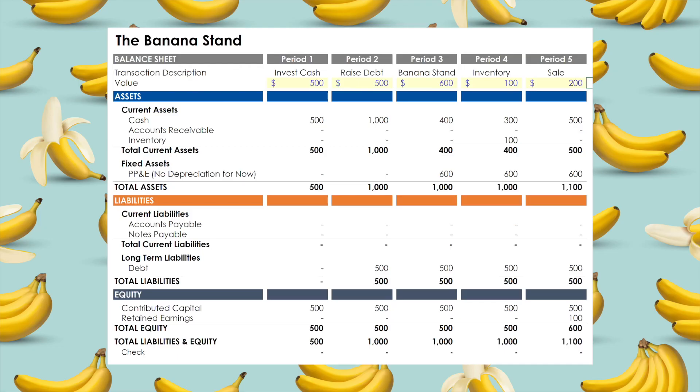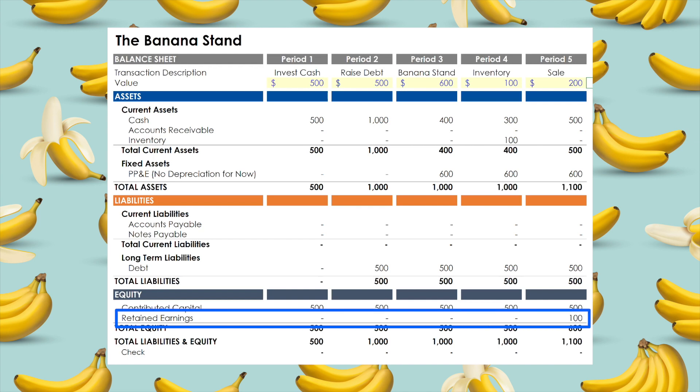This is the first time that the initial transaction has to be recorded in multiple accounts. The difference between the sale and the cost of inventory — i.e., the profit made on the sale — is recorded under retained earnings. And now you can repeat steps four and five until you can buy another banana stand and build your banana empire.